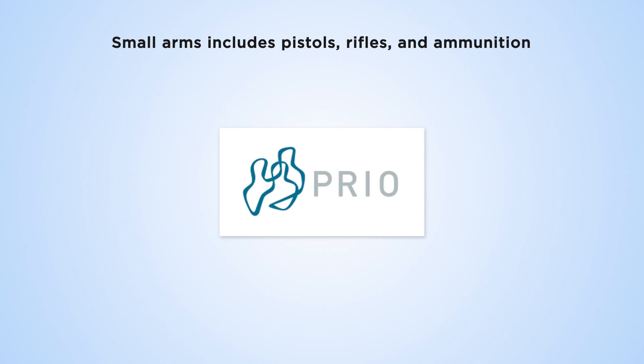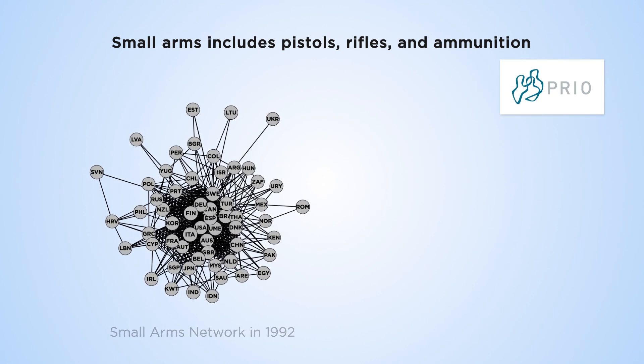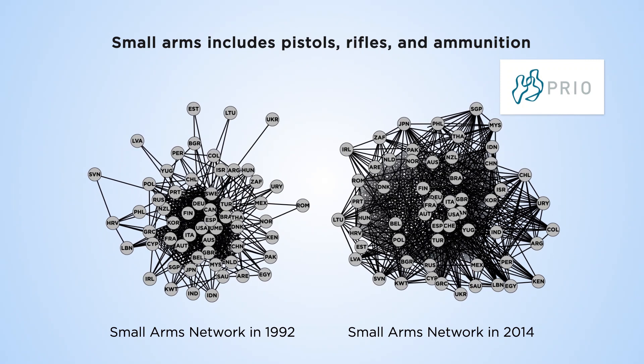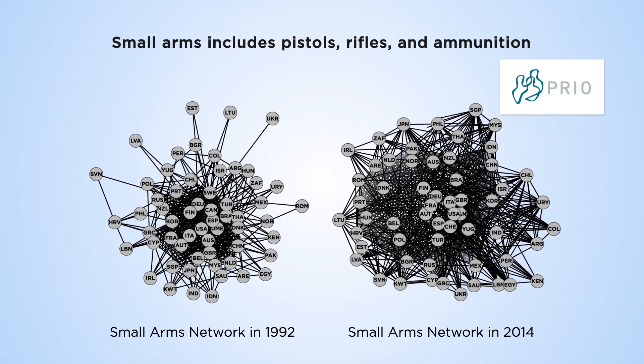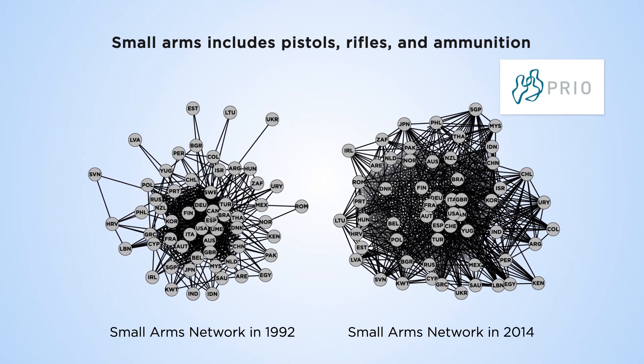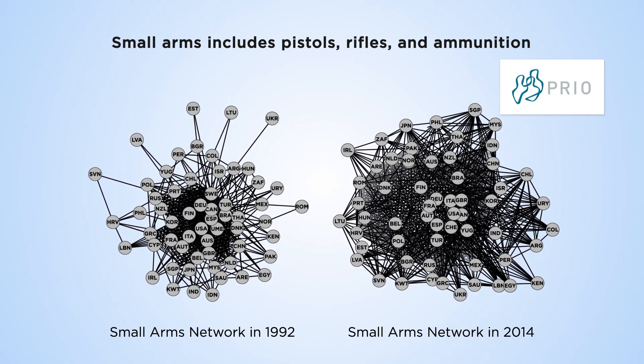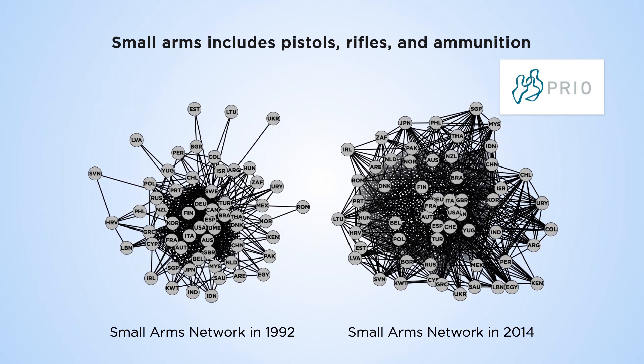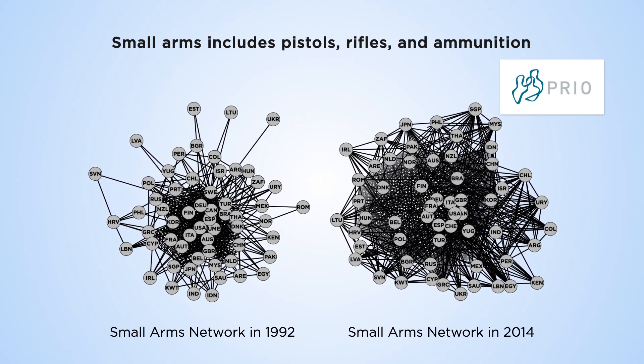Another example of the evolution of the arms trade can be taken from the Norwegian initiative on small arms transfer at the Peace Research Institute in Oslo. The Institute collects information about the international transfer of pistols, guns and ammunition, and their data has demonstrated an increase in network complexity over time.